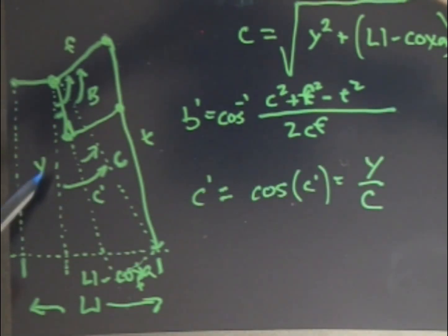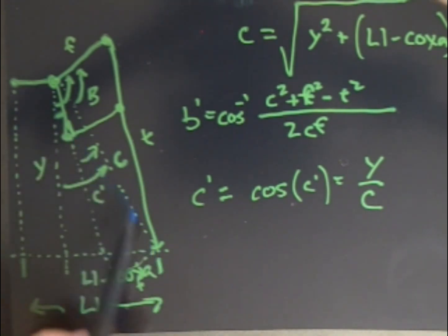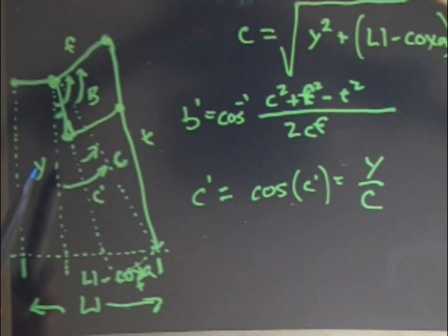For this next angle, which is going to be the C prime I'm calling it here, which is bounded by the triangle right here, Y the height, this opposite leg is going to be the L1 minus the coxa length, and the C. So I've got several ways of doing this, because this is actually a right triangle.